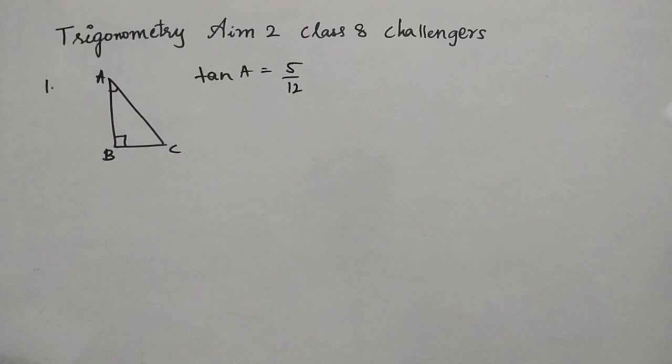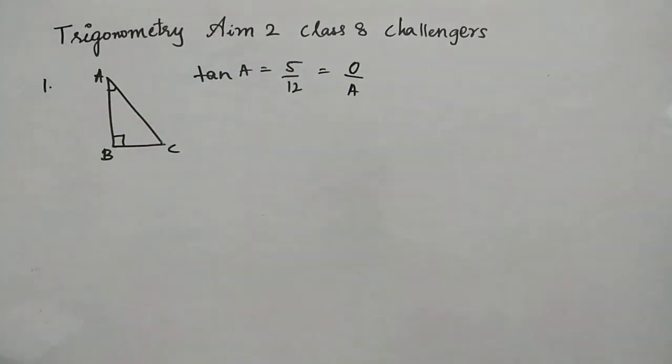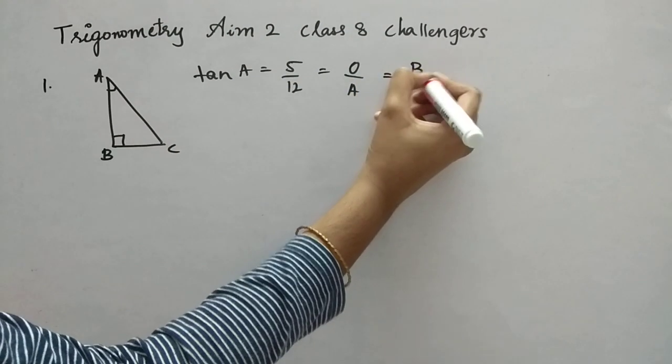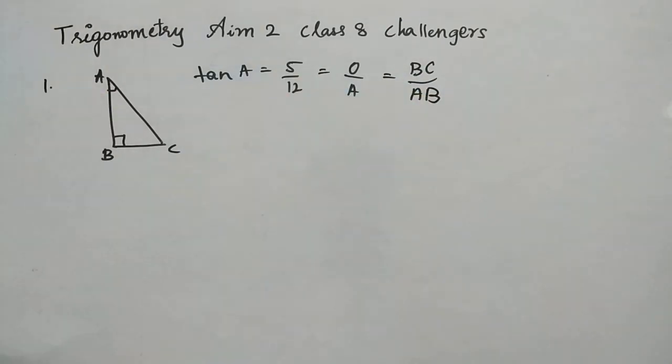So normally what we have to find now cos A and cosecant A minus cot A. So these are the two things. Now, first we have to find the other value, hypotenuse. Tan formula is O by A, that is opposite by adjacent. So we have to find hypotenuse also. So that is BC by AB, right, according to this figure.